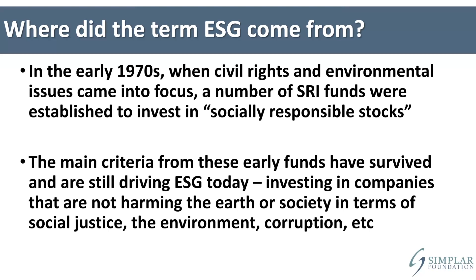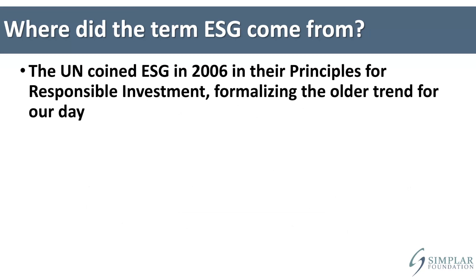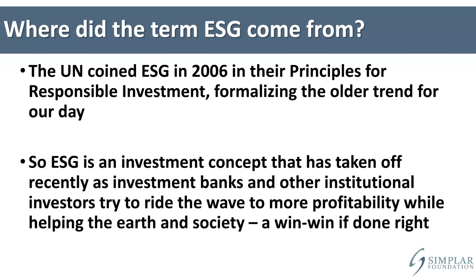Those three criteria — environment, social justice, and corruption avoidance (which is what governance is about) — are ESG. About 20 years ago, the UN coined the term ESG in a document called Principles for Responsible Investment. This took the older trend going back to the 18th century and formalized it for our day. And it's still driving the bus right now.